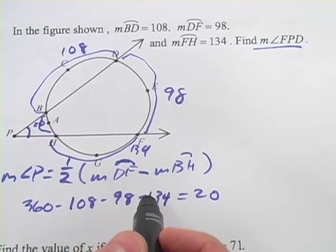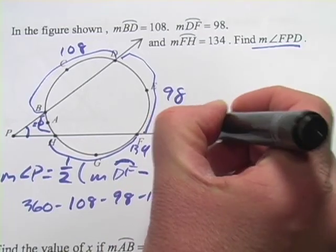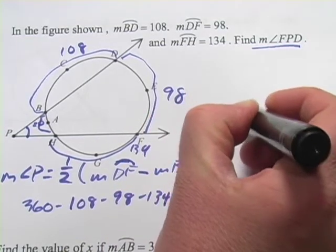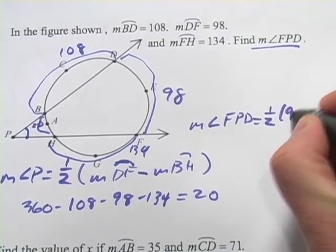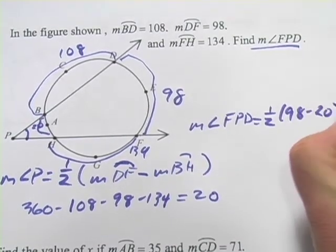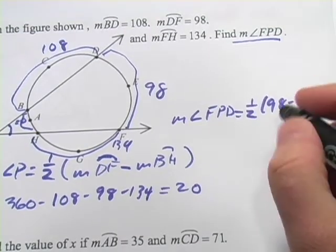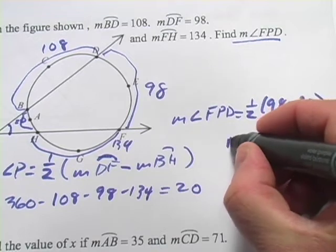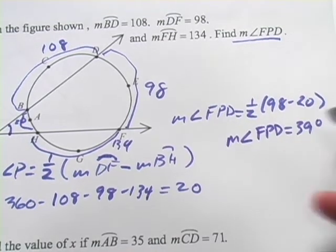Now we can just plug these values into our formula. DF is 98, so we've got the measure of angle FPD equals one half of 98 minus 20, the big arc minus the little arc. So that's one half of 78, which is 39.